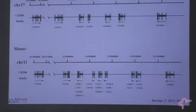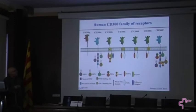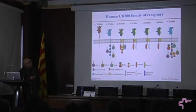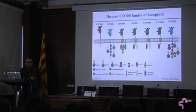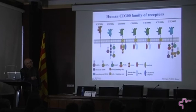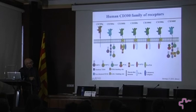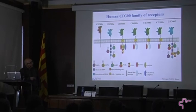This is a cartoon of the human CD300 family of receptors. The receptors that are inhibitory express an ITIM — inhibitory motif — in the intracellular tail: CD300A and CD300F. Then we have others that are activating receptors, characterized by a short cytoplasmic tail with a charged transmembrane residue that allows association with adapter proteins carrying motifs like YXXM or a PI3 kinase binding motif, or also ITAM activation motifs.